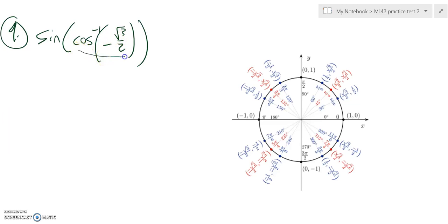So we're going to figure out what angle this ratio is associated with through cosine, and we're going to take the sine of it. Cosine is about width, so negative root 3 over 2 is here.